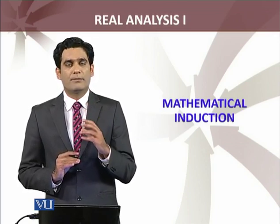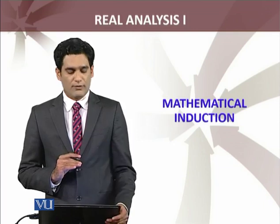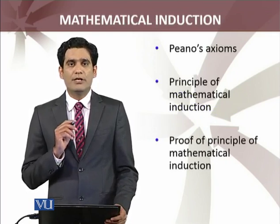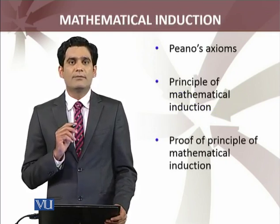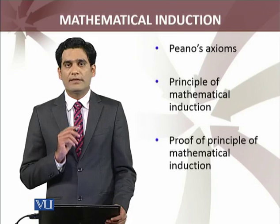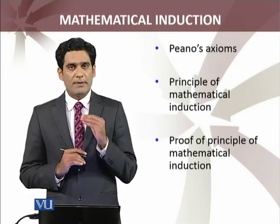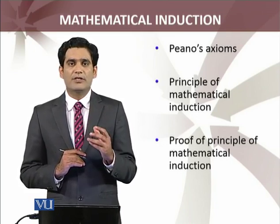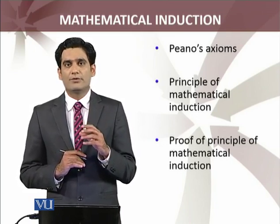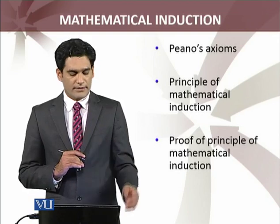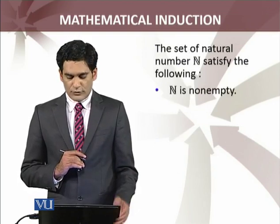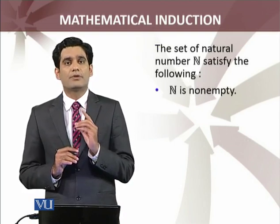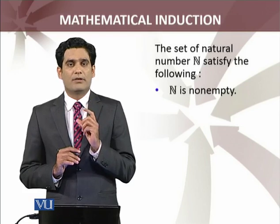We are going to take the principle of mathematical induction once again. To do this proof, I need some axioms — the axioms of natural numbers, which we call the Peano axioms. So I will first explain the Peano axioms, then state the principle of mathematical induction, and then give you the formal proof.